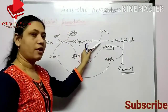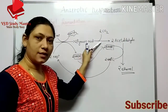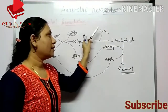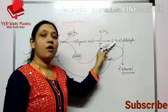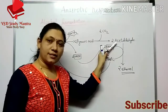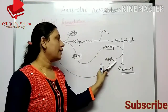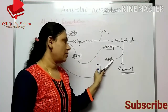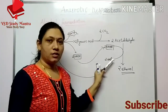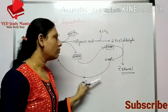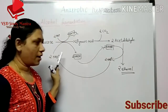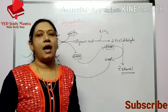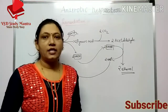Here also, carbon dioxide is released, forming 2 acetaldehyde. There is no oxygen for accepting the electrons, so these electrons are dropped down and ethanol is formed. This was alcohol fermentation, students.